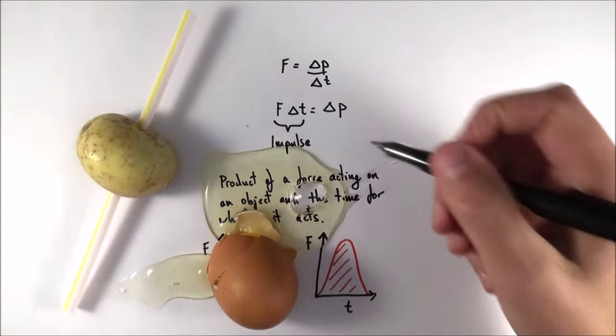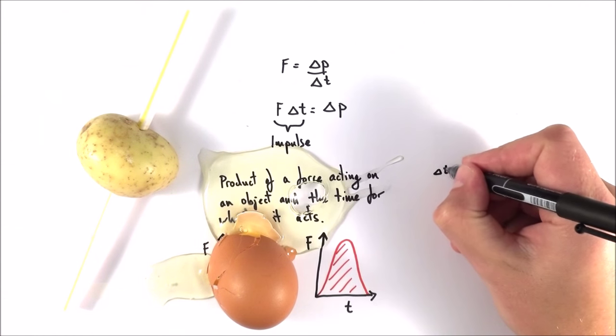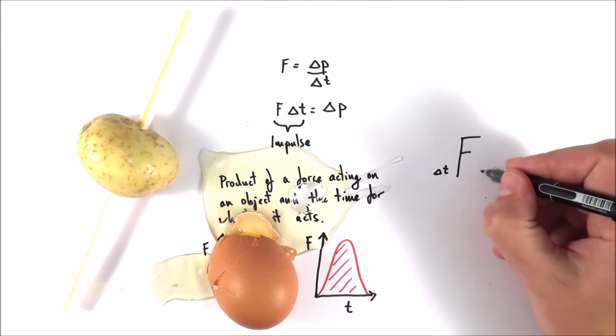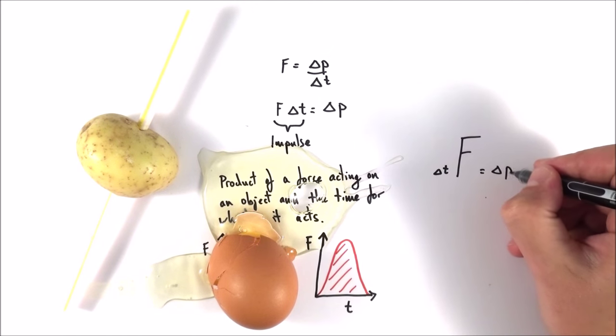Why is this? Well, for the same change in momentum, we have a very small collision time. And that means we have a very large force acting in order to change the momentum of that object.